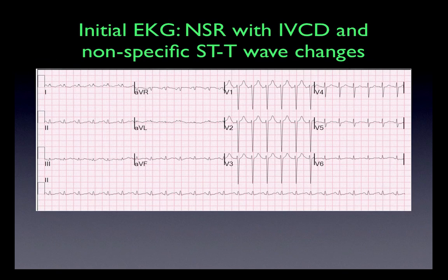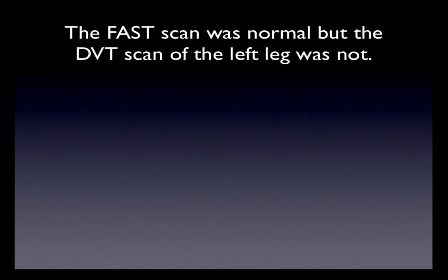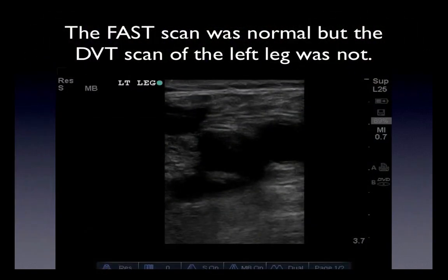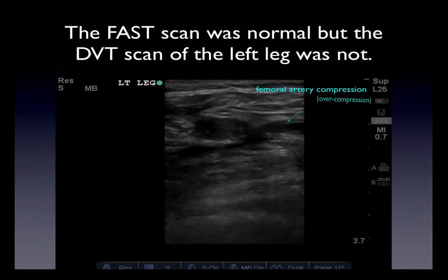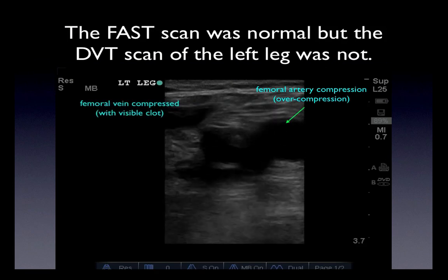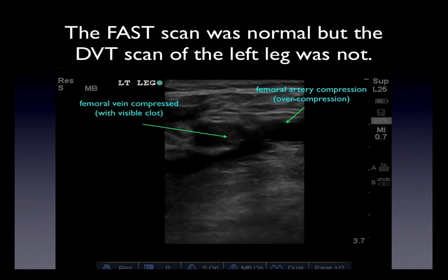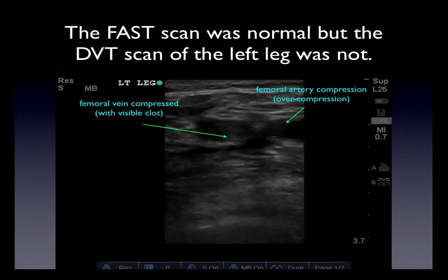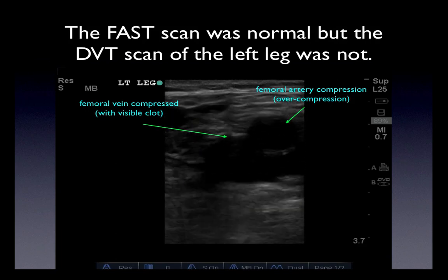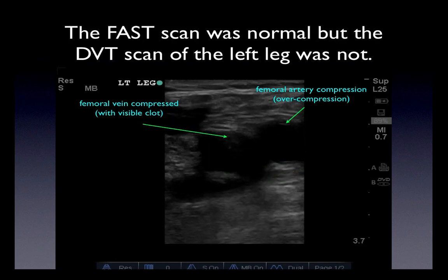The EKG shows a sinus rhythm with a conduction defect and nonspecific ST-T wave changes. The FAST scan was done and it was normal, which was not much of a surprise, but it was very rapid and easy to do — especially since we already had part of the FAST scan done since we were already looking at the heart.